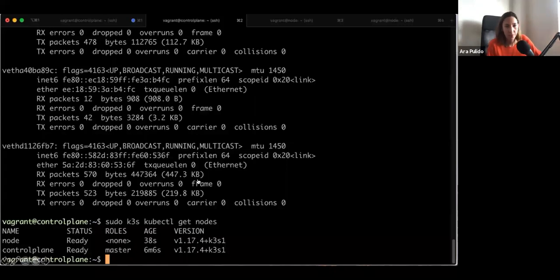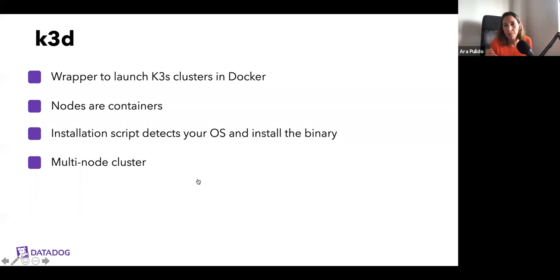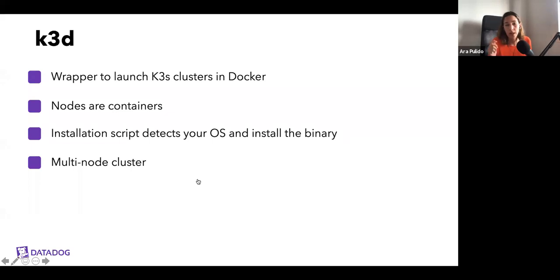Those VM-based K3S demos weren't super transparent developer experiences because we had to create VMs, SSH into them, and download the binary. So a second project called K3D was created — a wrapper to launch K3S clusters in Docker. This is similar in concept to Kind: running containers inside containers. Instead of VMs, your nodes will be containers. It's very easy to install — you just run a bash installation script which checks your OS and downloads the right binary. It's also multi-node.